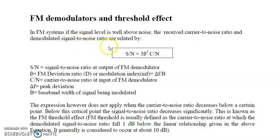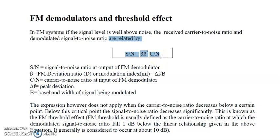The general formula is: the signal-to-noise ratio at the output of the receiver is equal to 3 beta squared times the carrier-to-noise ratio at the input of the receiver.